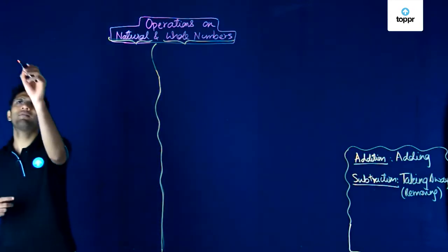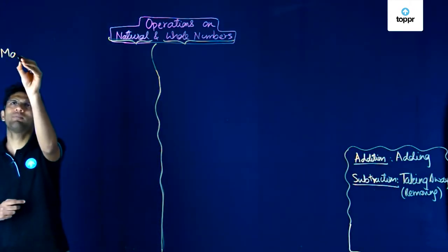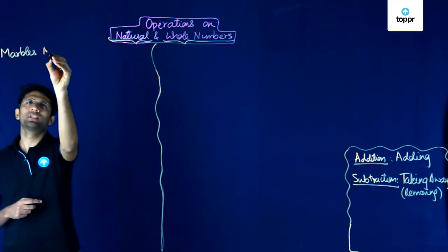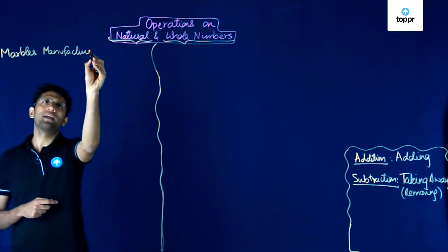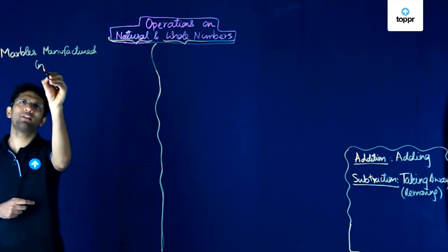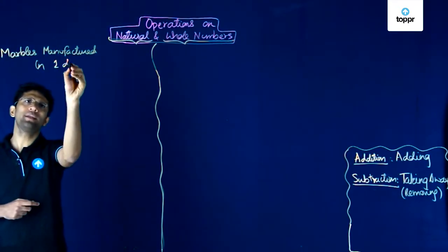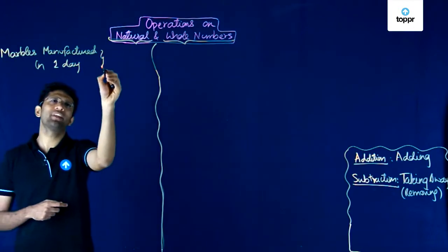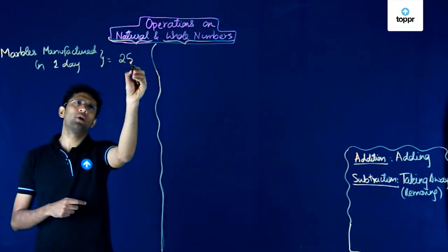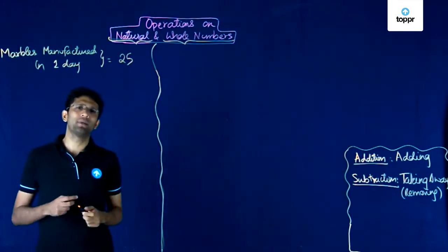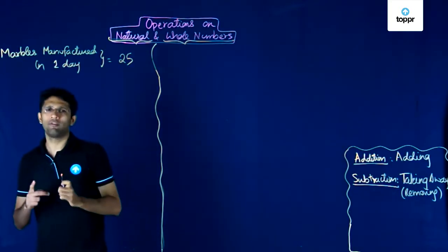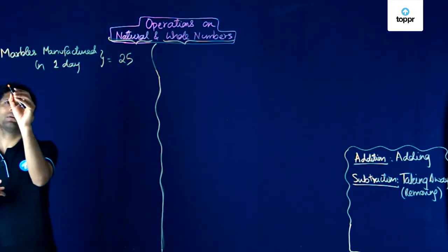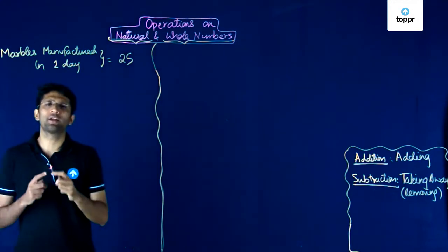We will take the example of marbles again. Suppose we are talking of a marble manufacturing company, and marbles manufactured in one day is equal to 25. There is just one small machine in that company which produces only 25 marbles each day. However, in a year, the machine works for 300 days.